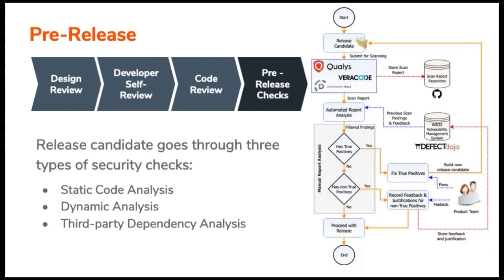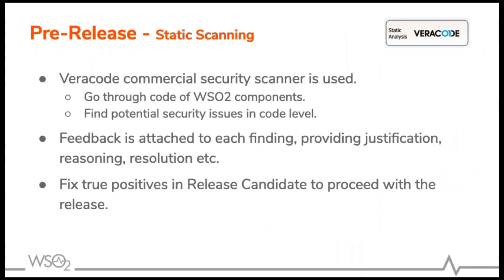Let's look at these scans in more detail. For static scanning, WSO2 uses Veracode, a commercial security scanner, which goes through the code of WSO2 components and finds potential security issues. During this process, we do not include third party library source code because that is covered in a separate tool. Veracode goes through the source code of WSO2 components and finds code-level issues. Once the report is provided, product teams will attach feedback to each finding providing justifications, reasoning, or resolution information. All true positives must be fixed before proceeding with the release.